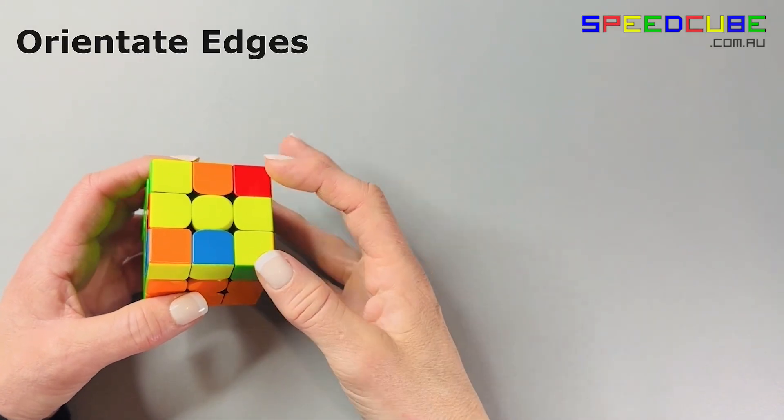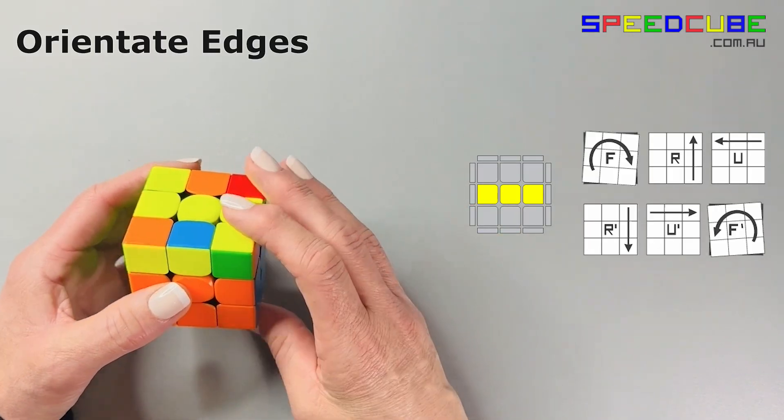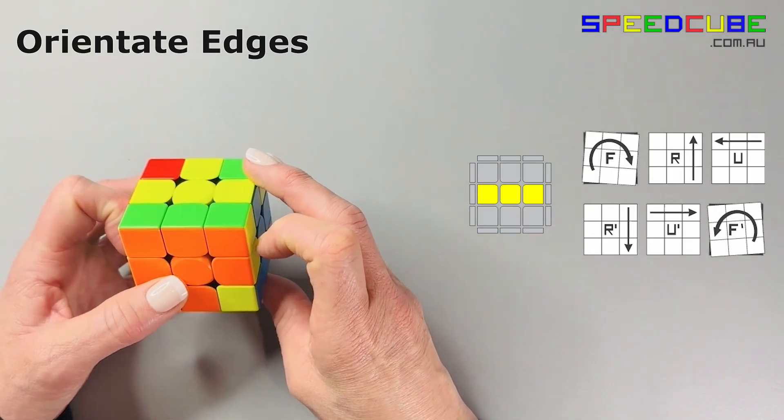If you have the line, remember to ignore the corners. Then you perform these moves. Very similar.